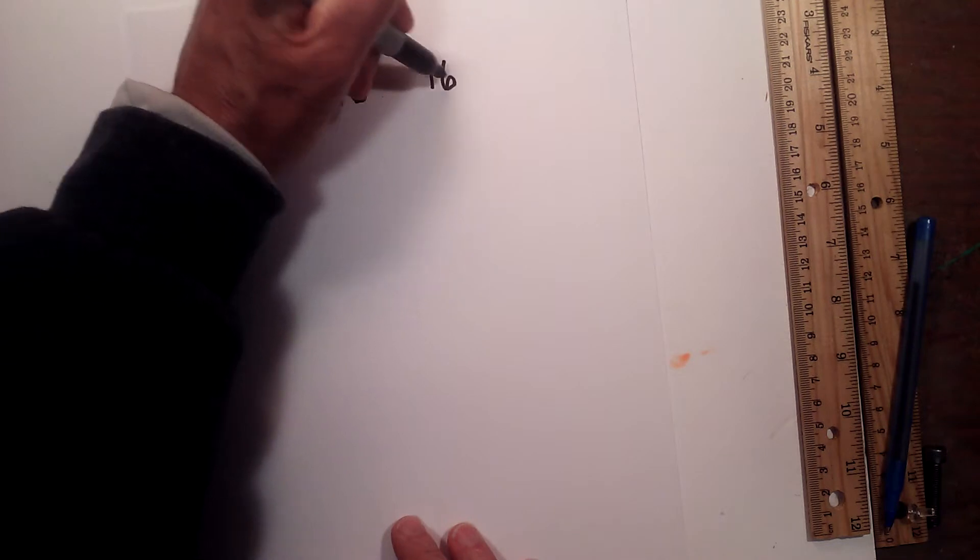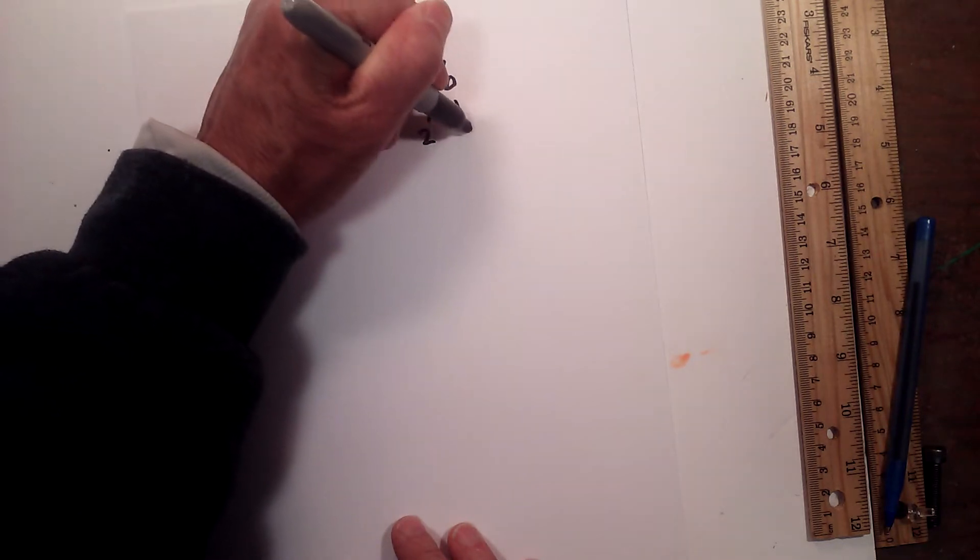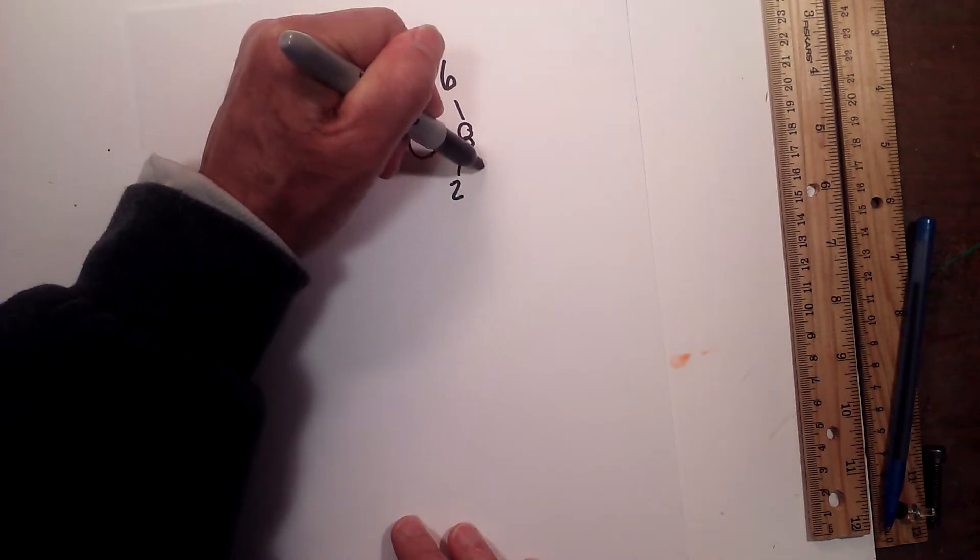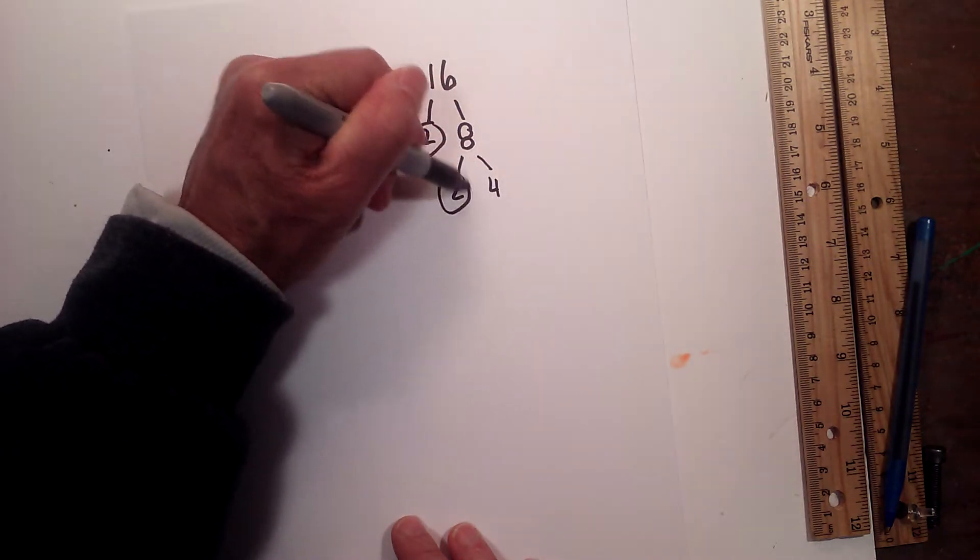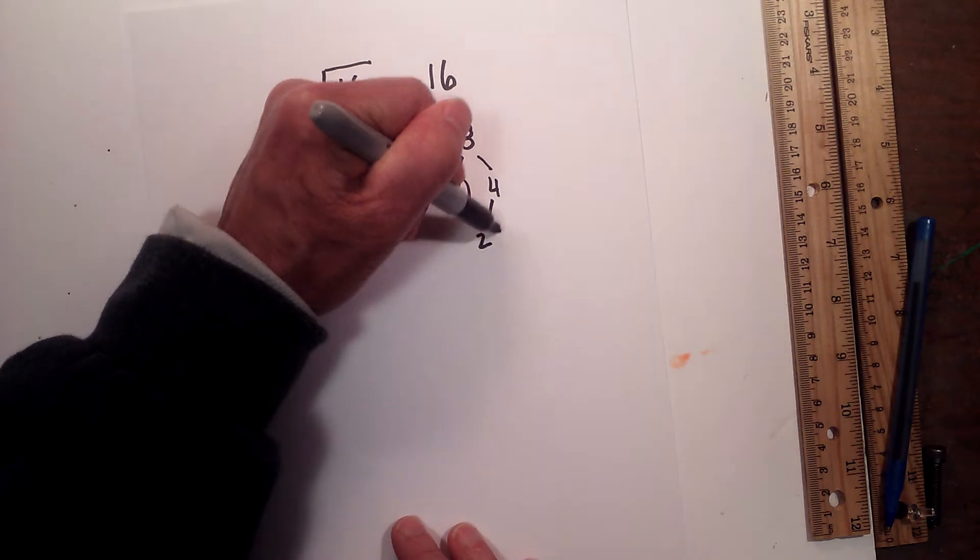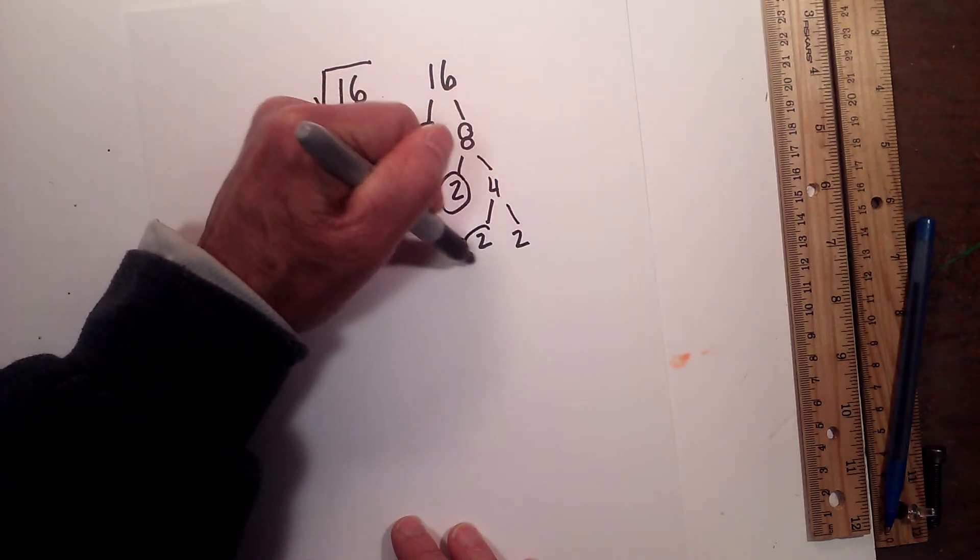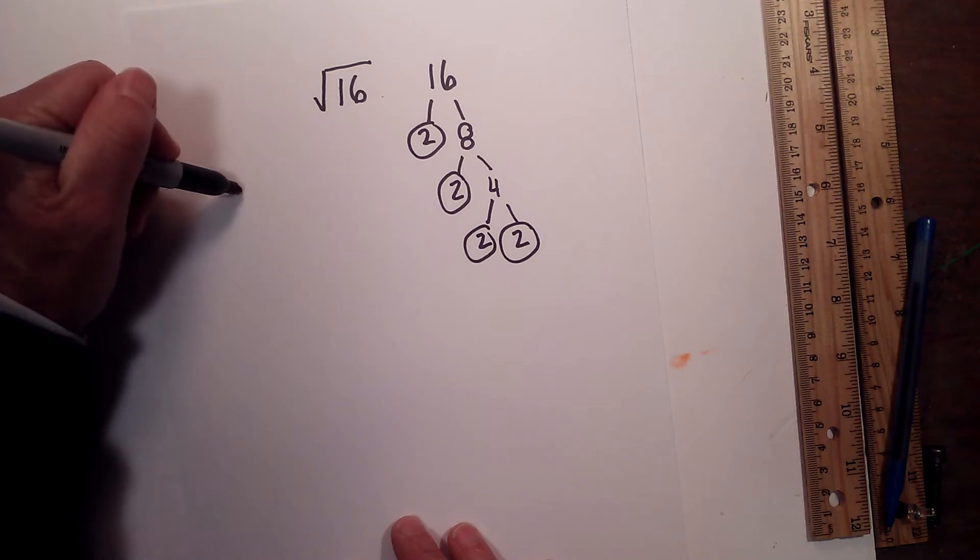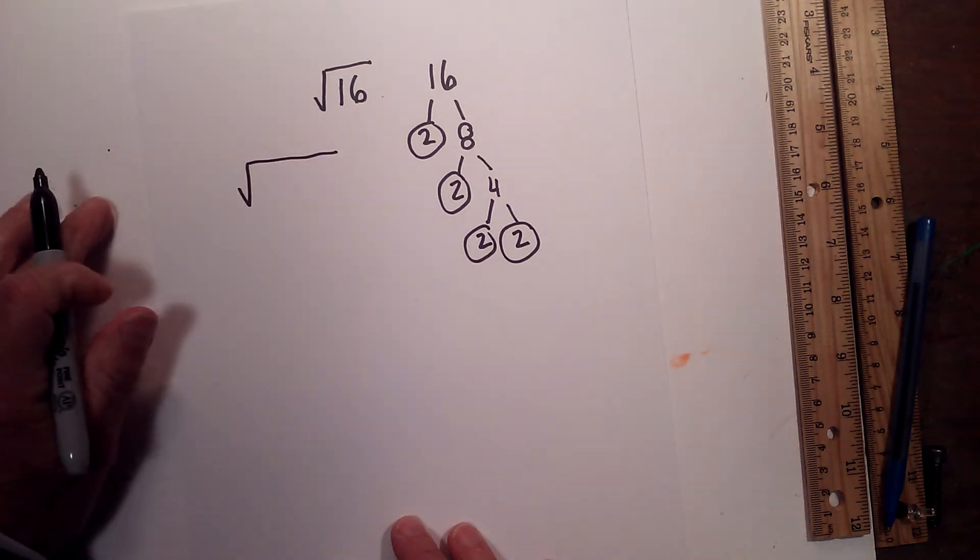And so I'm going to write the 16 here. We have 2 times 8, circle the 2 because it is prime. And then 2 times 4, circle the 2 because it is prime. And then 2 times 2, circle both 2's because they are prime.